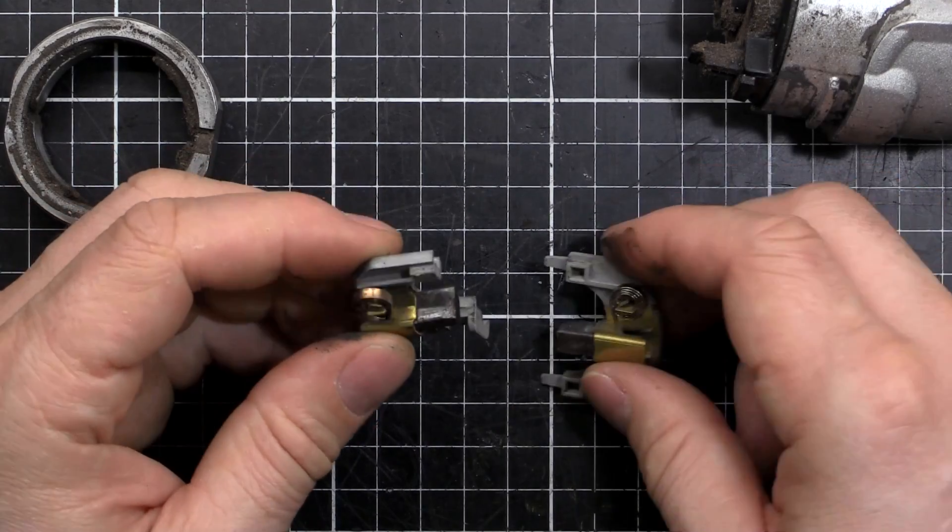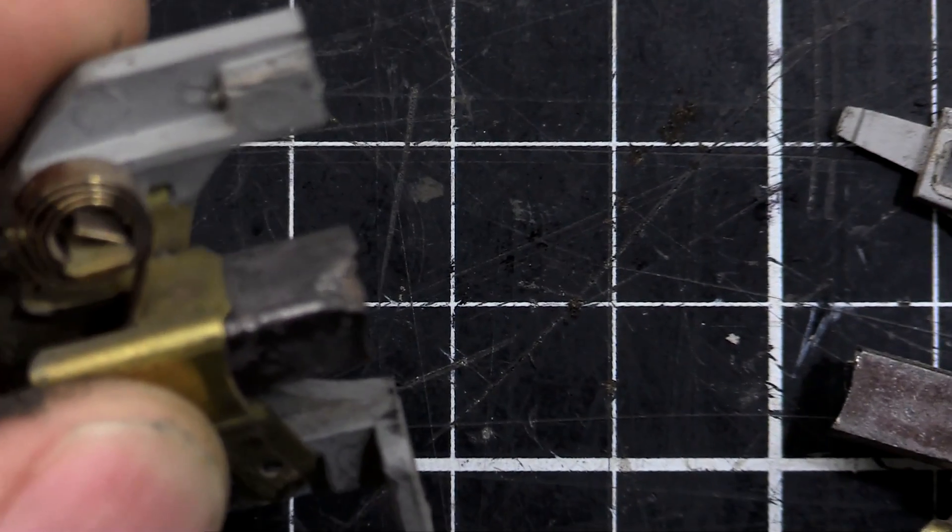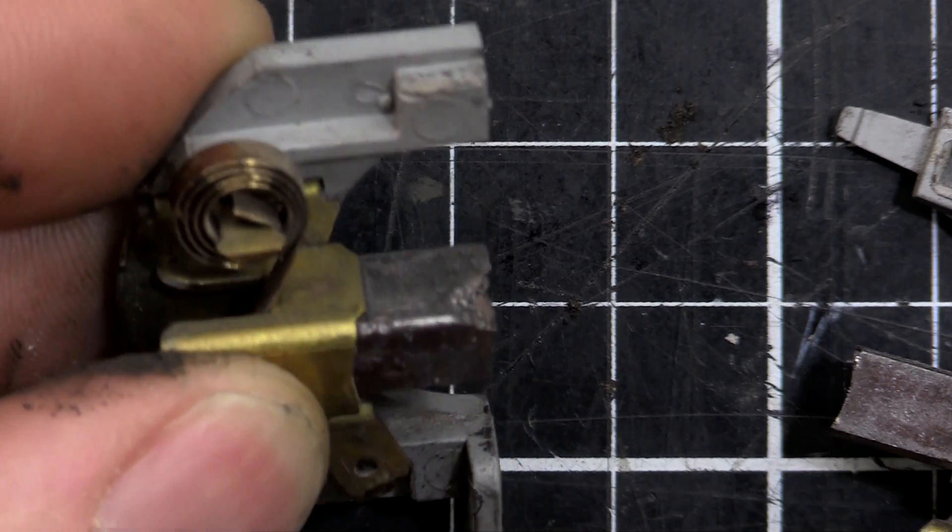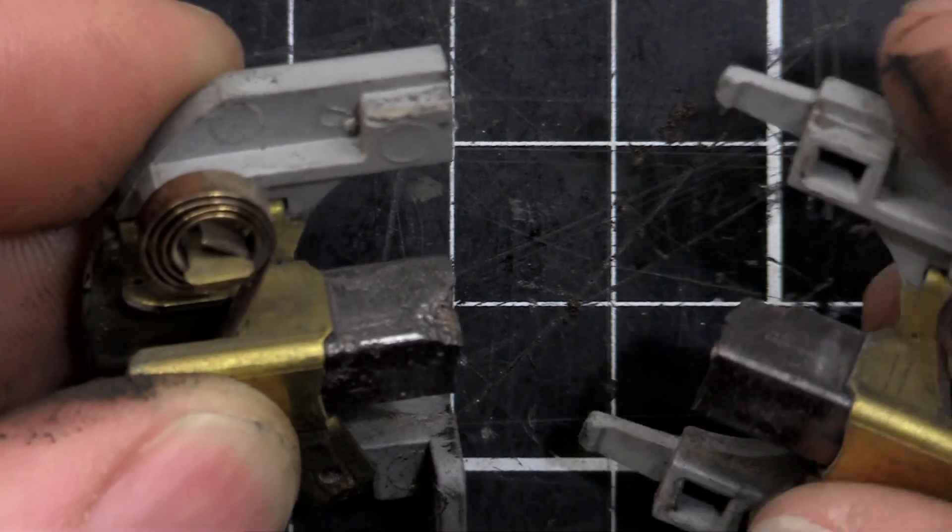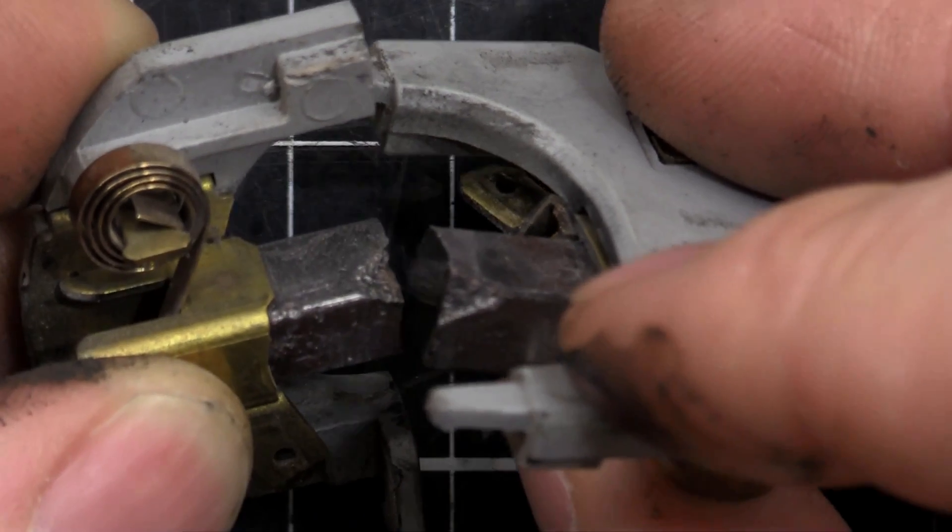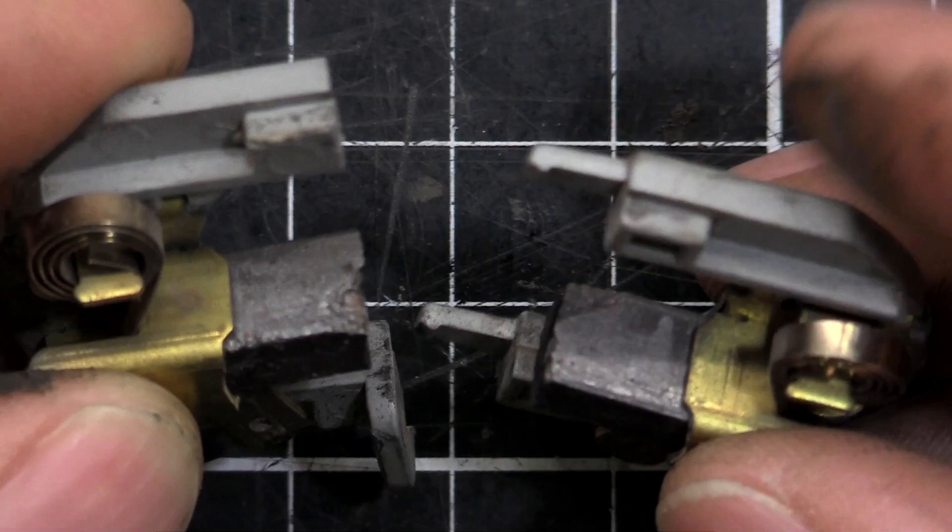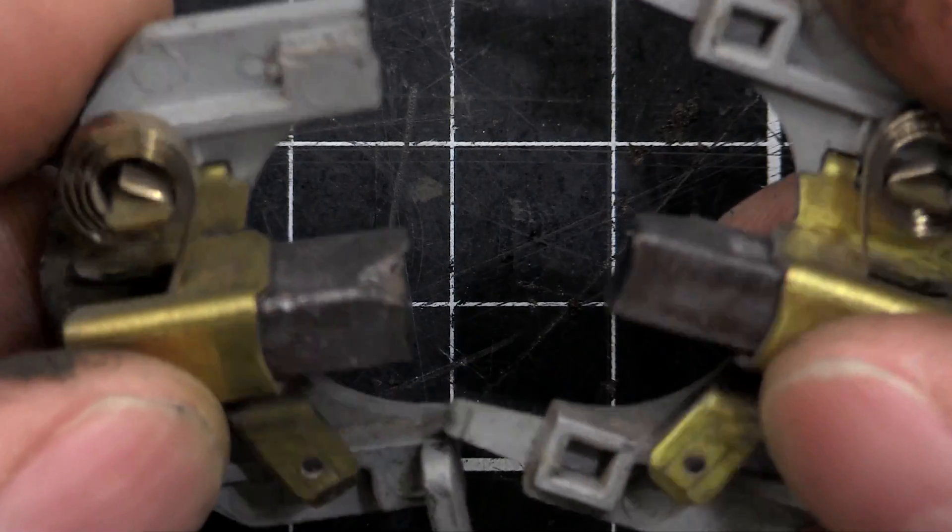The brushes are looking pretty good. I'll zoom in a bit. You can see there, they're a little bit chunked, and that one as well, just there. But that's not too bad. It's only on the very edge. There's a lot of meat left in them, so not a problem. We'll keep using those.